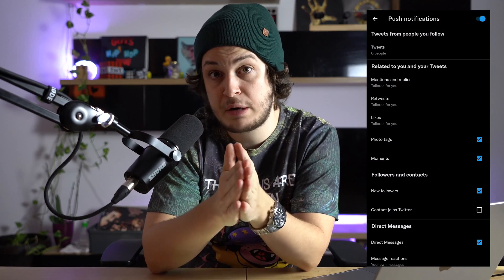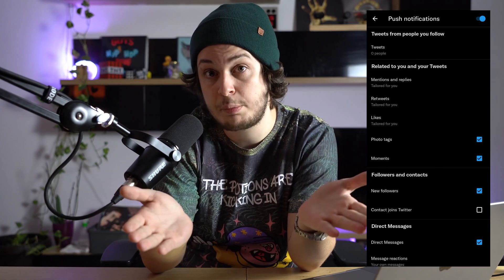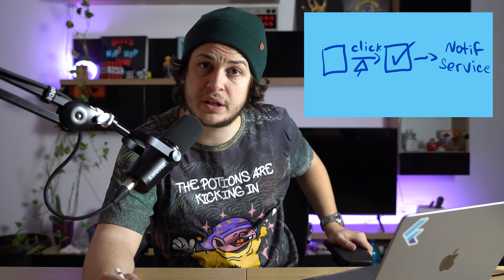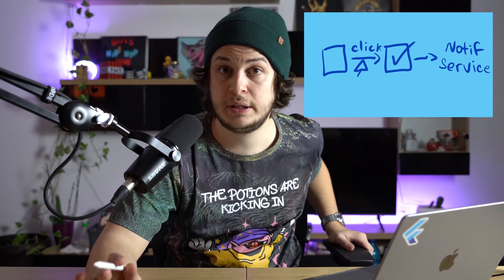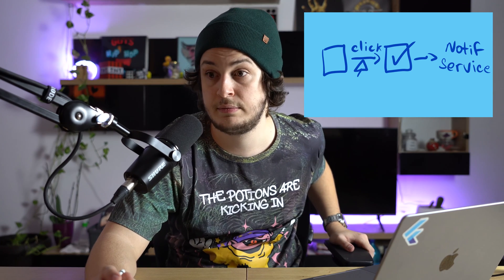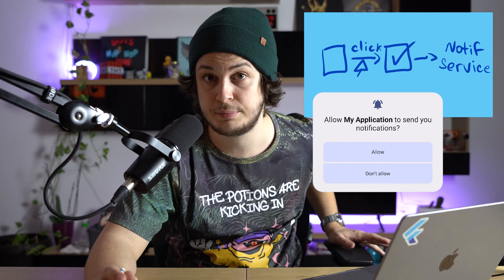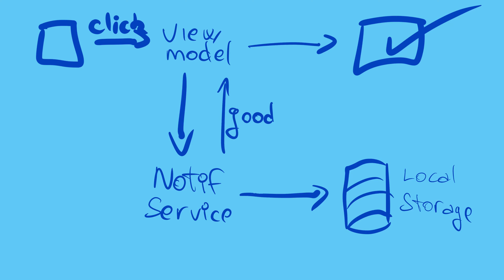For example, in a settings menu, a checkbox that allows notifications for your application. Do you want the checkbox to set its own value whenever a user clicks on it, and only then report to the notification service? Or would you prefer the second scenario, where the user clicks the checkbox, the view model requests an update of the notification preferences, checks or requests notification permissions, and — if and only if everything goes well — updates the state in the view model and updates the checkbox. I really hope the obvious answer is the second one.